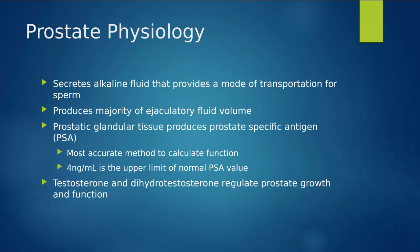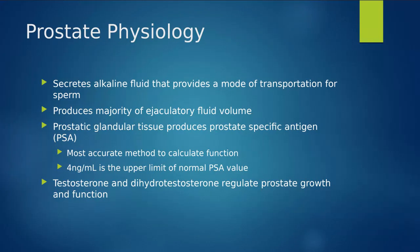The prostate's main function is to secrete that alkaline fluid and produce the majority of the ejaculatory fluid volume. The prostatic glandular tissue — the functional tissue of the prostate — is also going to produce what we call PSA, or prostate-specific antigen. When we get into prostate pathologies, we're going to talk about PSA quite a bit. As the male patient ages, we pay very close attention to that PSA level, which we can test through blood work. The upper limit of normal for PSA is 4 ng/mL. When we see high PSA levels, that's when we get into prostate pathologies.